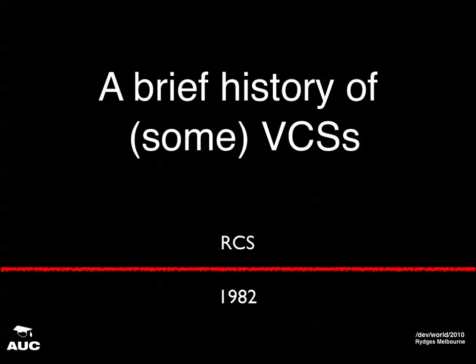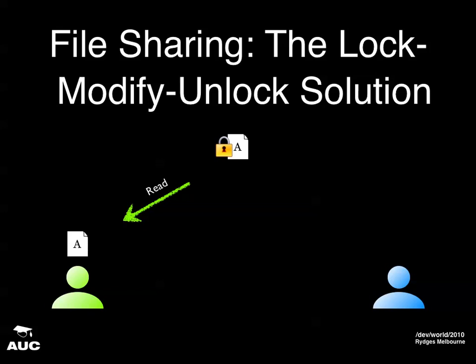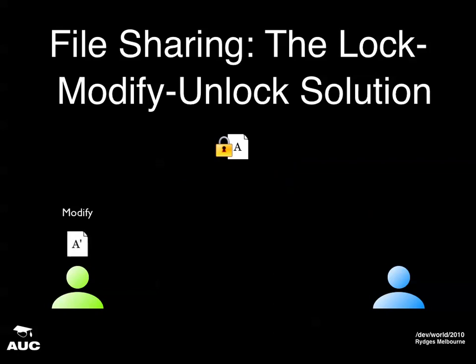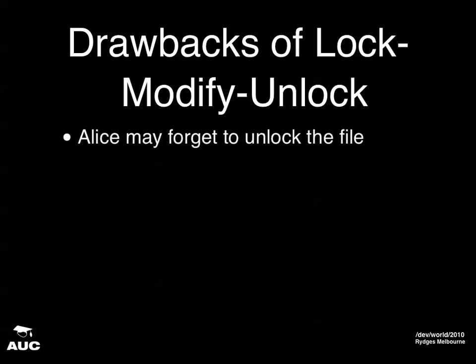SCCS and RCS had a particular way of dealing with the file sharing problem called the lock-modify-unlock solution. First of all, Alice acquires a lock on file A and then reads file A. Now if Bob comes along and tries to lock file A, he won't be able to do it because it's already locked. Alice does a modification, a write, and an unlock. Now Bob can lock and download A prime, so he won't overwrite Alice's changes.